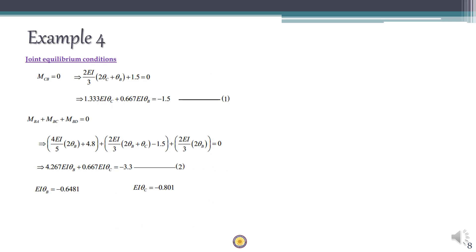For the joint equilibrium conditions: at simple support C, MCB = 0. Setting the slope deflection expression for MCB to zero gives a relationship between θ_C and θ_B. At intermediate support B, the sum of all moments is zero: MBA + MBC + MBD = 0. Substituting all values from the slope deflection equations gives a second equation. Solving the two simultaneous equations yields θ_B and θ_C.